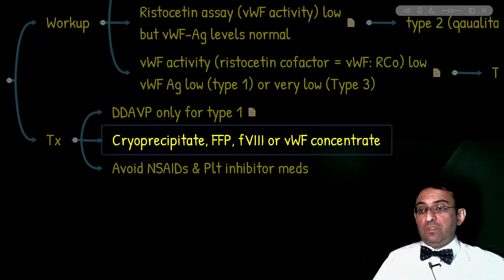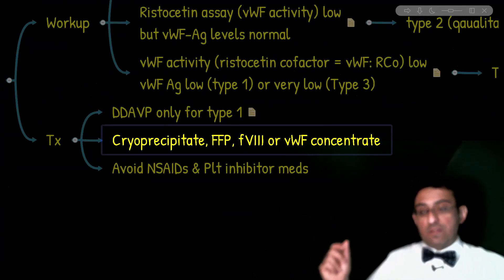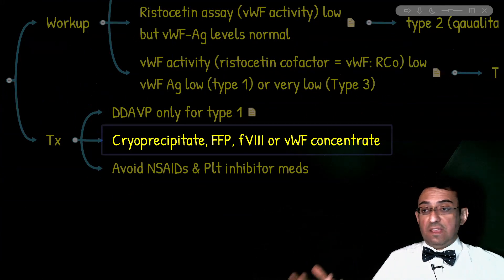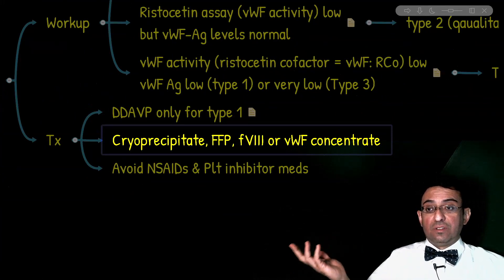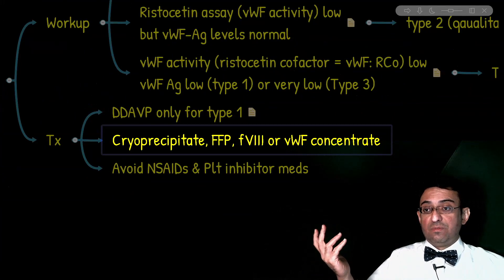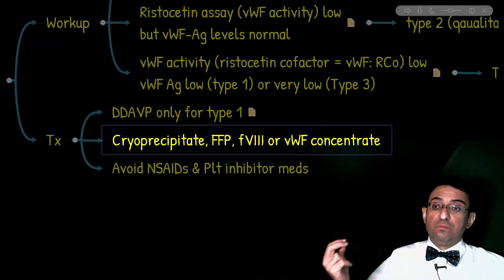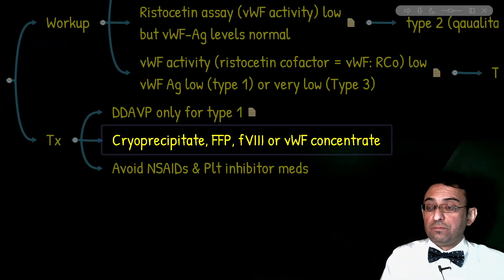In addition to types II and III, what are the other indications for use of cryoprecipitate or factor VIII and von Willebrand factor concentrate? If the patient in type I does not respond to von Willebrand treatment with desmopressin, or if the patient has major bleeding or surgeries.